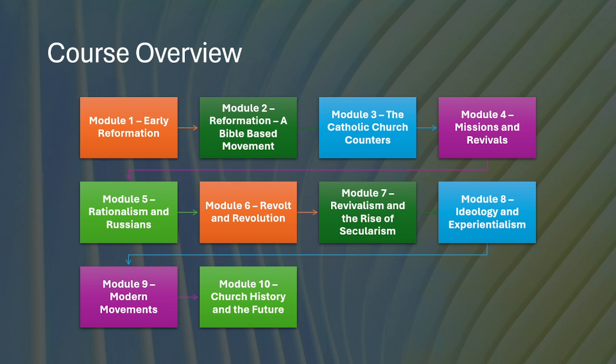Module five focused on rationalism and Russians. The Russian Orthodox Church has constantly done a diligent job of going back, as the text does, to remind us of what's going on in the Orthodox Church. We looked at module six, Revolt and Revolution. Module seven was Revivalism and the Rise of Secularism. The previous module was Ideology and Experimentation — the troubled, conflict-laden 20th century. And today we're in module nine, which encompasses modern movements.